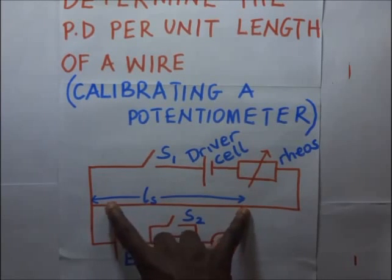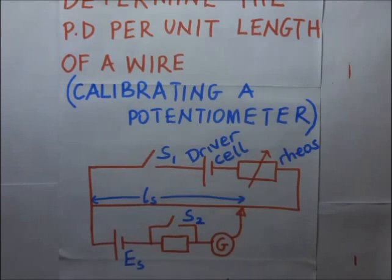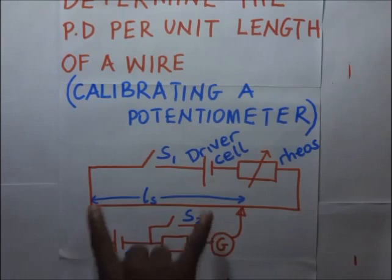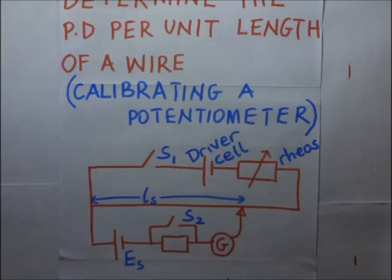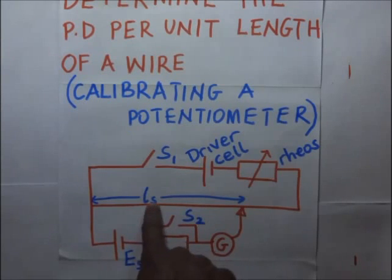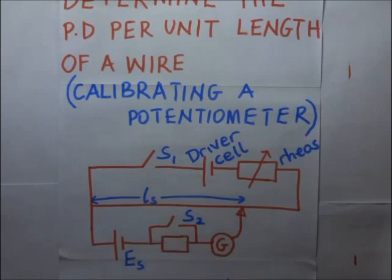After measuring and recording the balance length ls, then we can get the PD per unit length of this wire by dividing the EMF across this cell which is es. We divide it by ls, so es over ls gives us the PD per unit length of that wire. That is how we can conduct an experiment to determine the PD per unit length of the wire. This brings us to the end of this video.